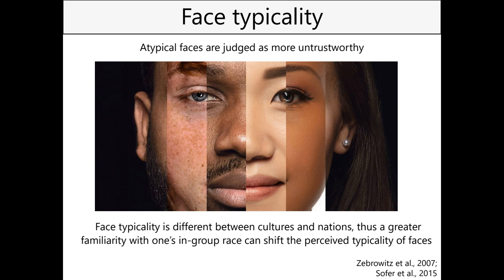However, impressions of trust do not depend only on objective morphological characteristics. Other non-perceptual factors also influence how we form impressions of trust. For example, face typicality: atypical faces are usually judged as more untrustworthy. Face typicality differs between cultures and nations, and greater familiarity with one's in-group race shifts how we perceive typicality in faces, resulting in an own-race positivity bias - we tend to judge people of our own race more positively.